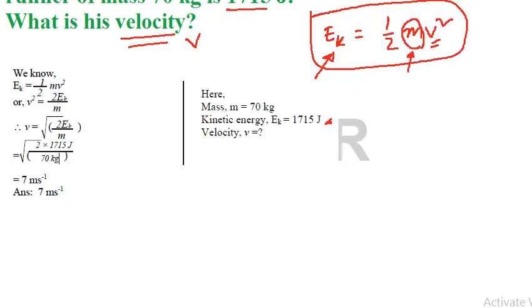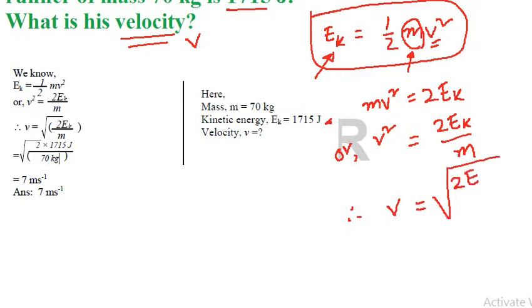If we simplify this formula, we get mv² = 2Ek. Then v² = 2Ek/m. So v = √(2Ek/m). Now we have to put all the values into this formula.